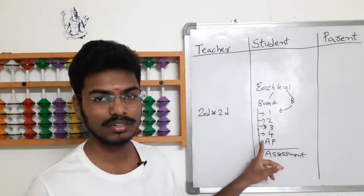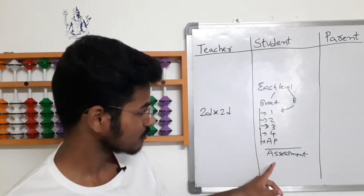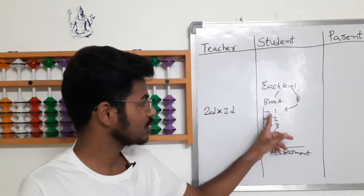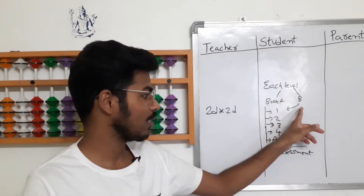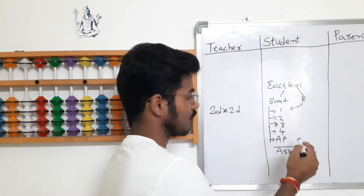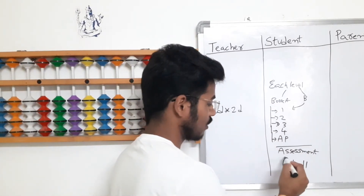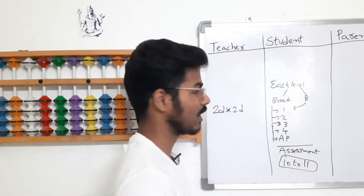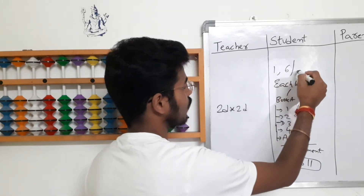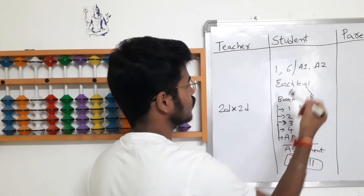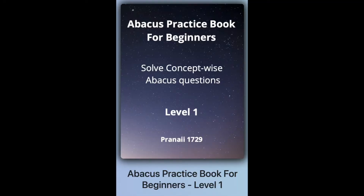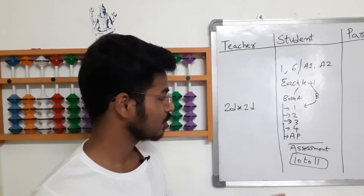Assessment syllabus and practice papers are already given in the book, so students can practice easily. If they want more practice, they can use our website. Book A and Book B combined will take around 10 to 11 weeks for each level. In total we have eight levels — level one through level six, and then advanced level one and advanced level two. Each level has two books, except the first level, which is structured differently.